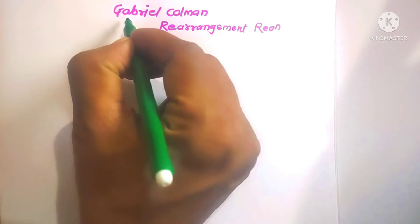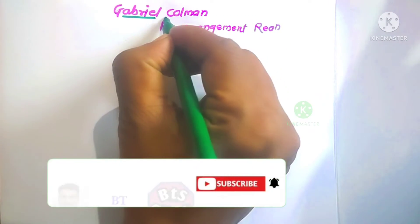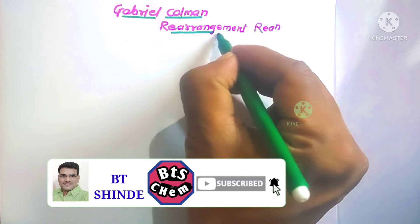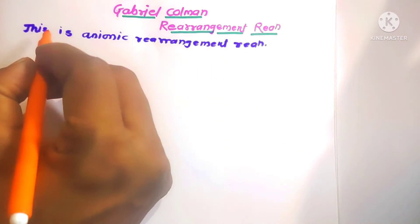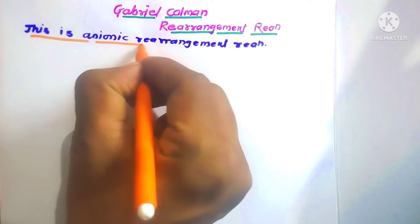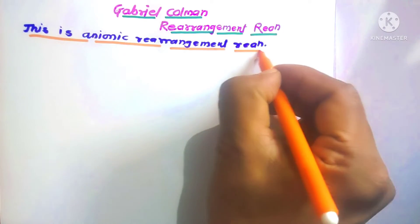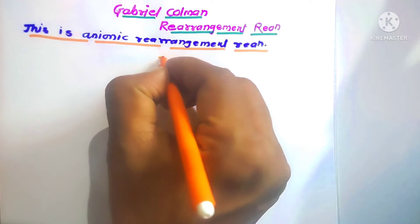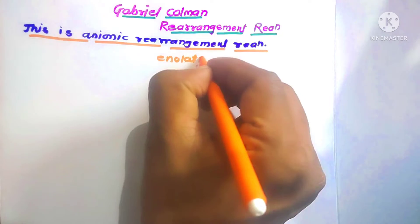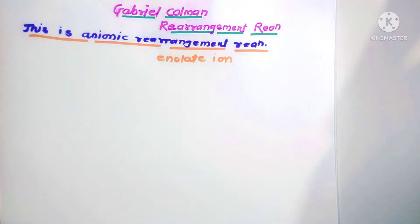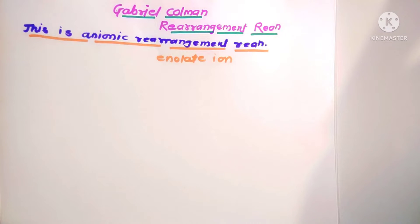Hello friends, today we are going to discuss the Gabriel-Coleman rearrangement reaction. This is an anionic rearrangement reaction in which formation of enolate ions is the main intermediate. This reaction was discovered in 1900 by Sigmund Gabriel and James Coleman. This is an example of a ring expansion reaction.